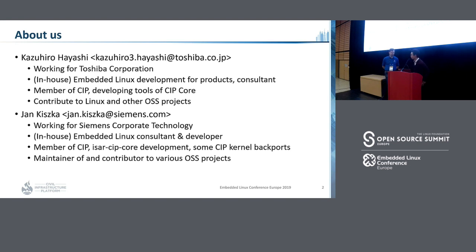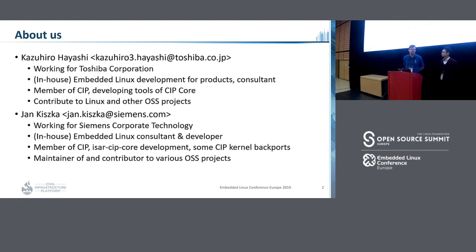My name is Jan Kisker. I'm basically doing the same what Kazuhiro is doing, but for Siemens Co-op technology. I'm also involved in the CIP project, looking after the ESA path of CIP that we'll look into later on, and also maintaining and contributing to a number of other open source projects.